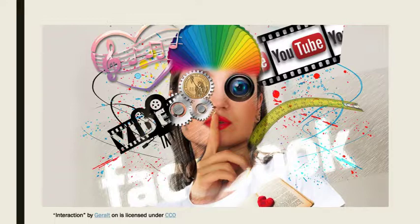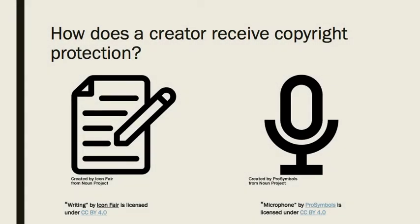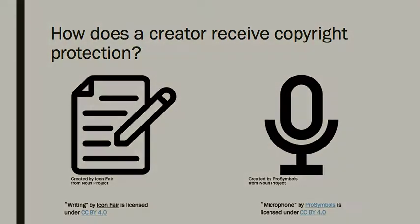Instead, it would be much easier to use music that is in the public domain or through a Creative Commons license. We will learn more about Creative Commons in another video. A copyright officially exists on a work as soon as the work exists in a tangible form, meaning it has to be written down or otherwise recorded by the creator. It could be a poem on the back of a napkin or a drawing created using an app on a smartphone.